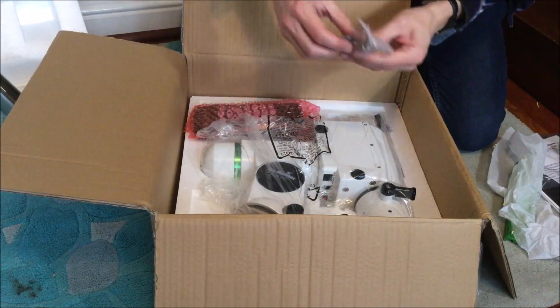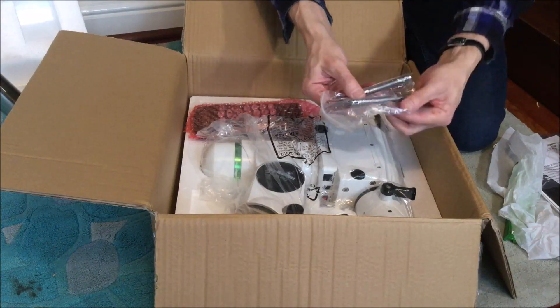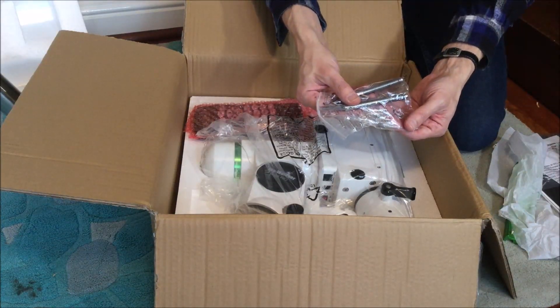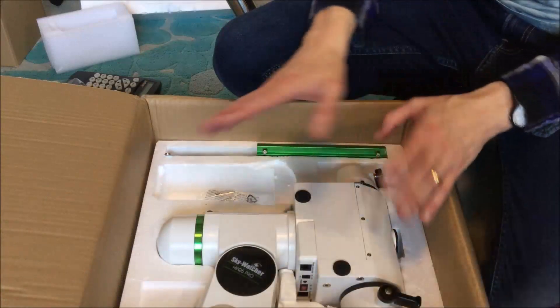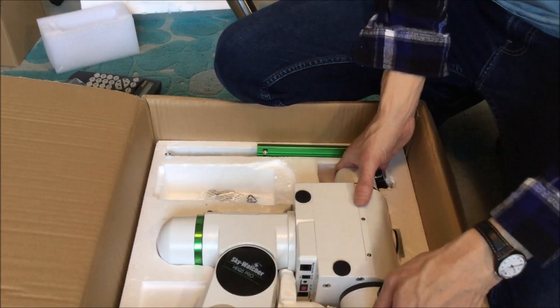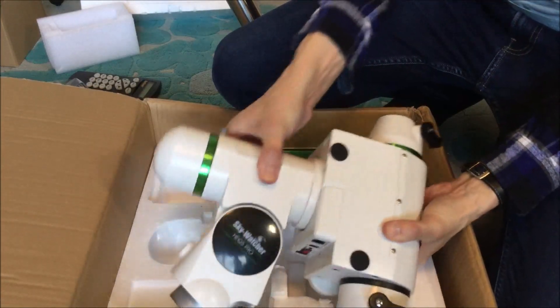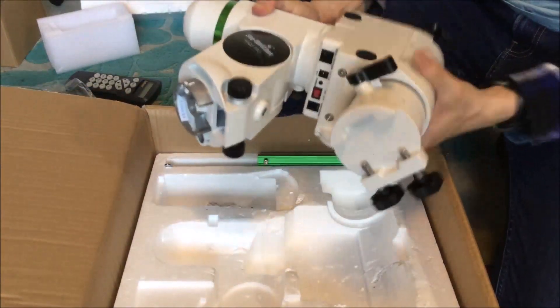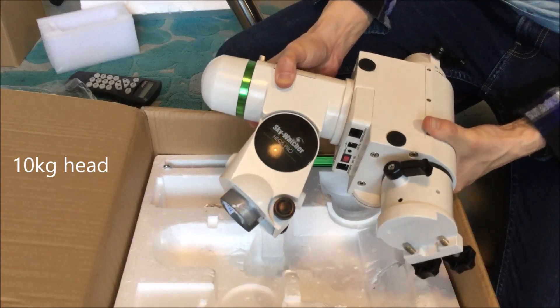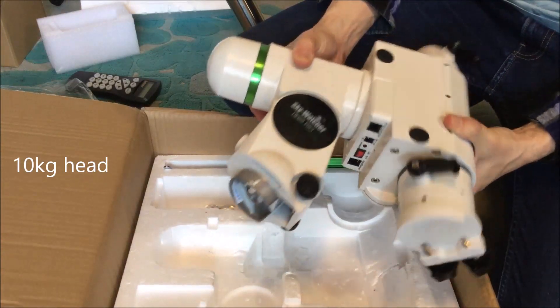Other than that, we've just got a couple of adjustment bolts and we'll see the function of those when we put them out together. So if we remove all the packaging and we lift the mount head out of polystyrene then the first thing you notice, other than the fact that it's several kilos of mount, is that it's free to rotate.